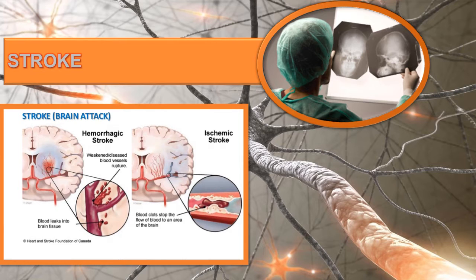Two major treatment modalities for acute ischemic stroke include fibrinolytic therapy and endovascular interventions. The most important factor in whether or not to give TPA is the time the patient was last seen normal. The standard window for TPA is about three hours from that time. In 2009, the American Stroke Association recommended an expanded time interval from three to four-and-a-half hours for eligible patients, unless they are over age 80 or have an INR less than or equal to 1.7.